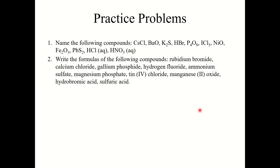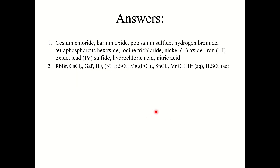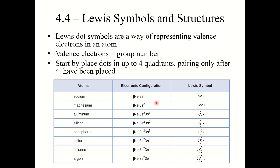Here are some practice problems for you to try. Number one: going from formula to name. Number two: going from name to formula. Pause the video, give these a try, and the answers are on the next slide — you can download these slides to check your work. That is the end of section 4.3. See you in the next video when we dive into section 4.4: Lewis symbols and structures.